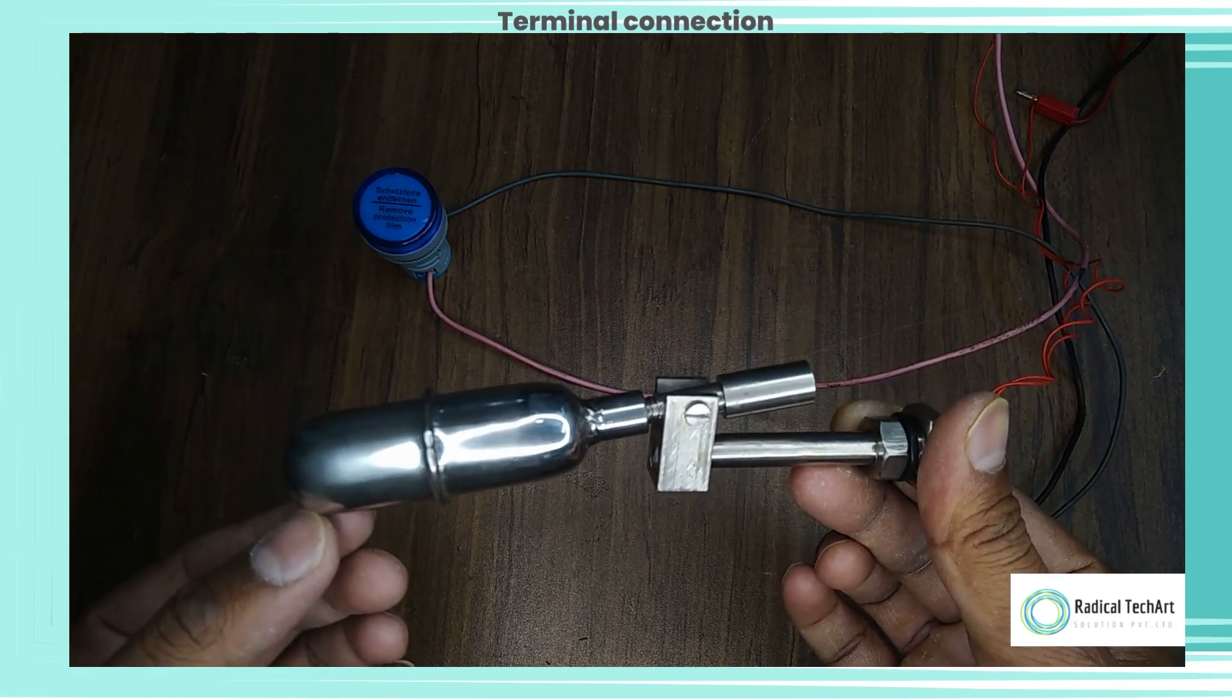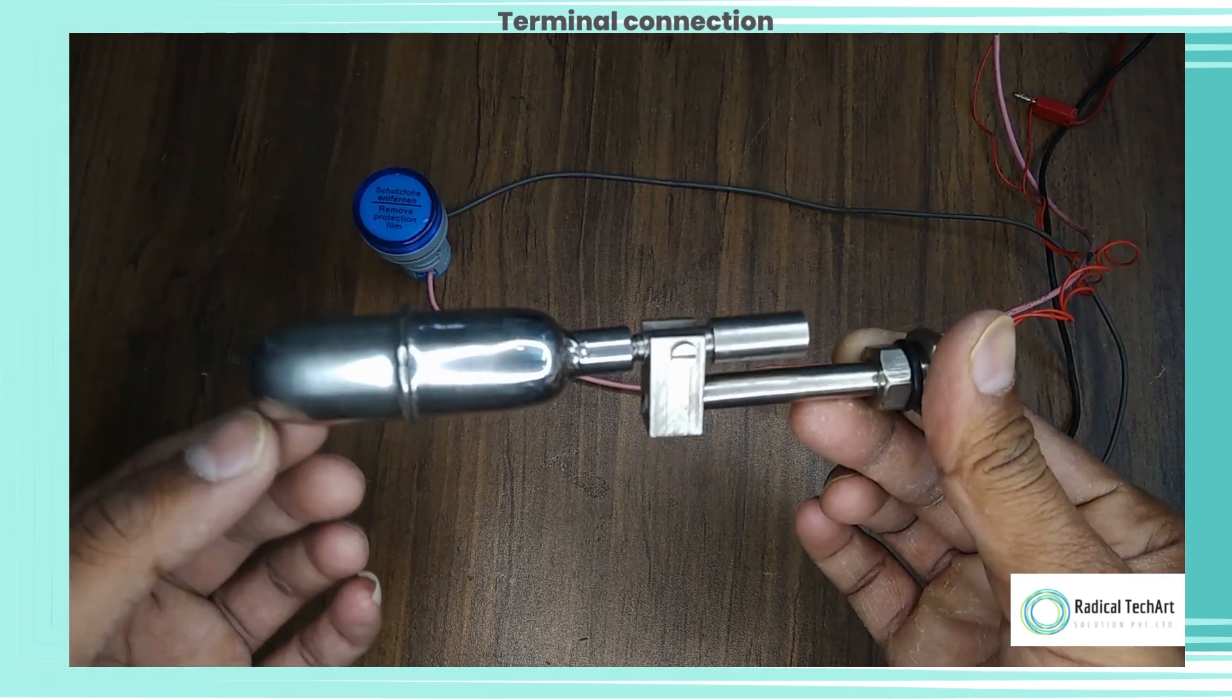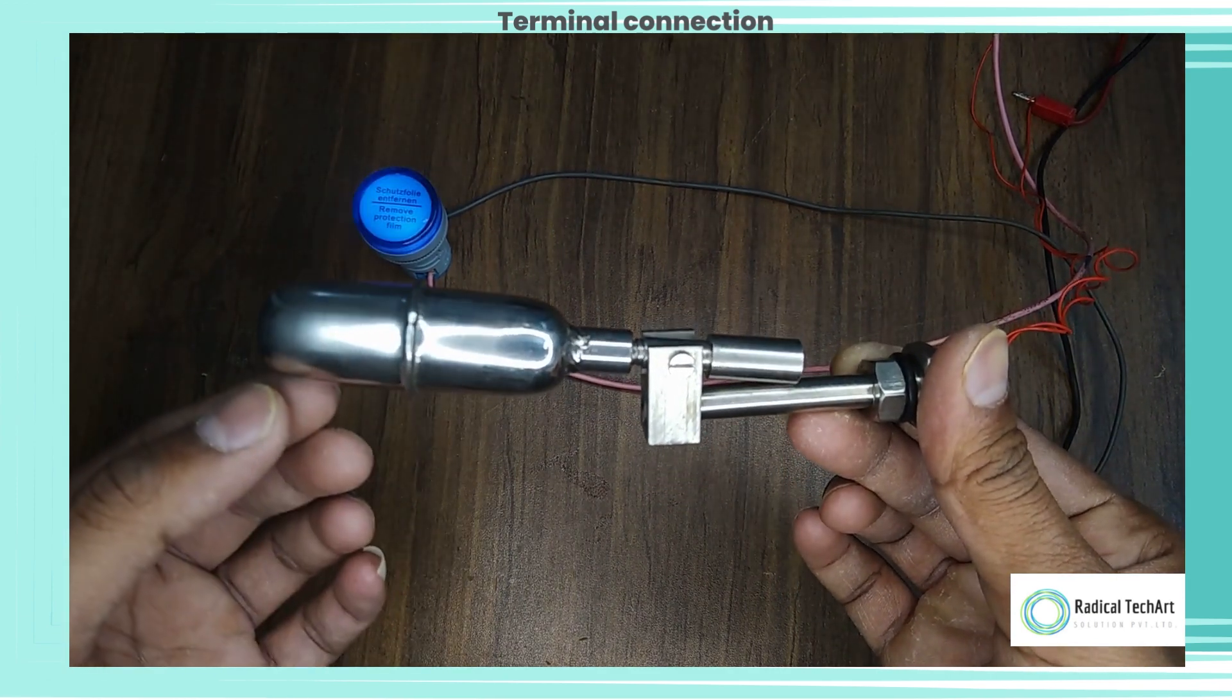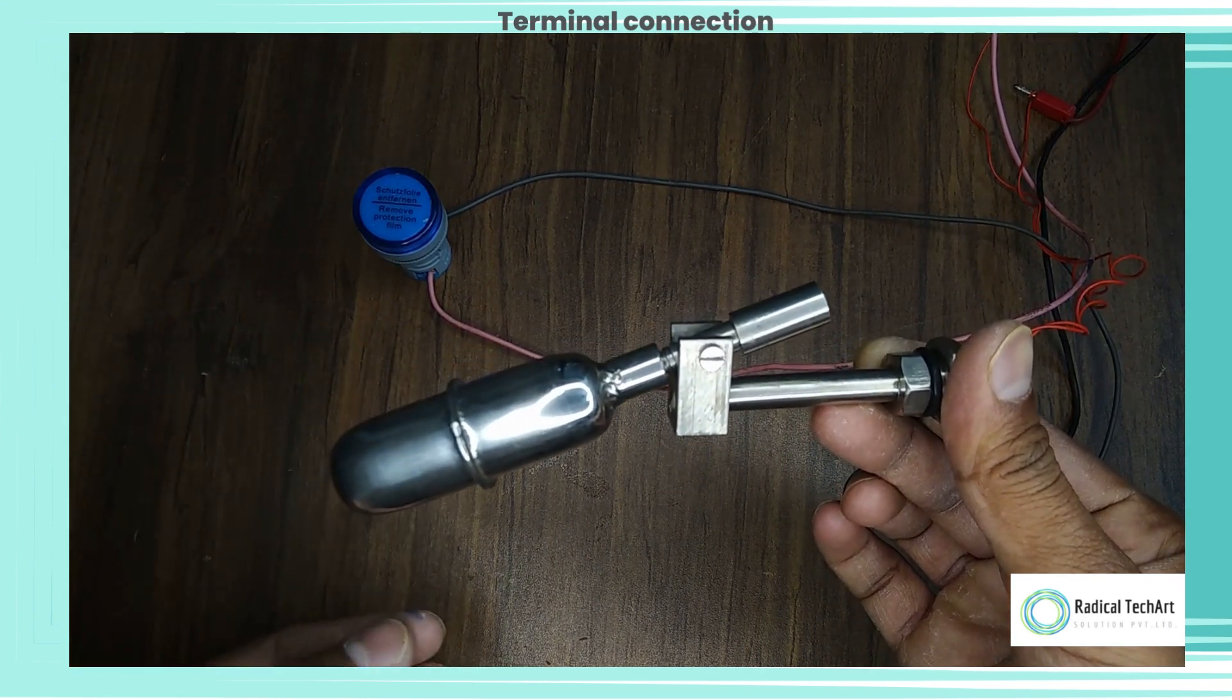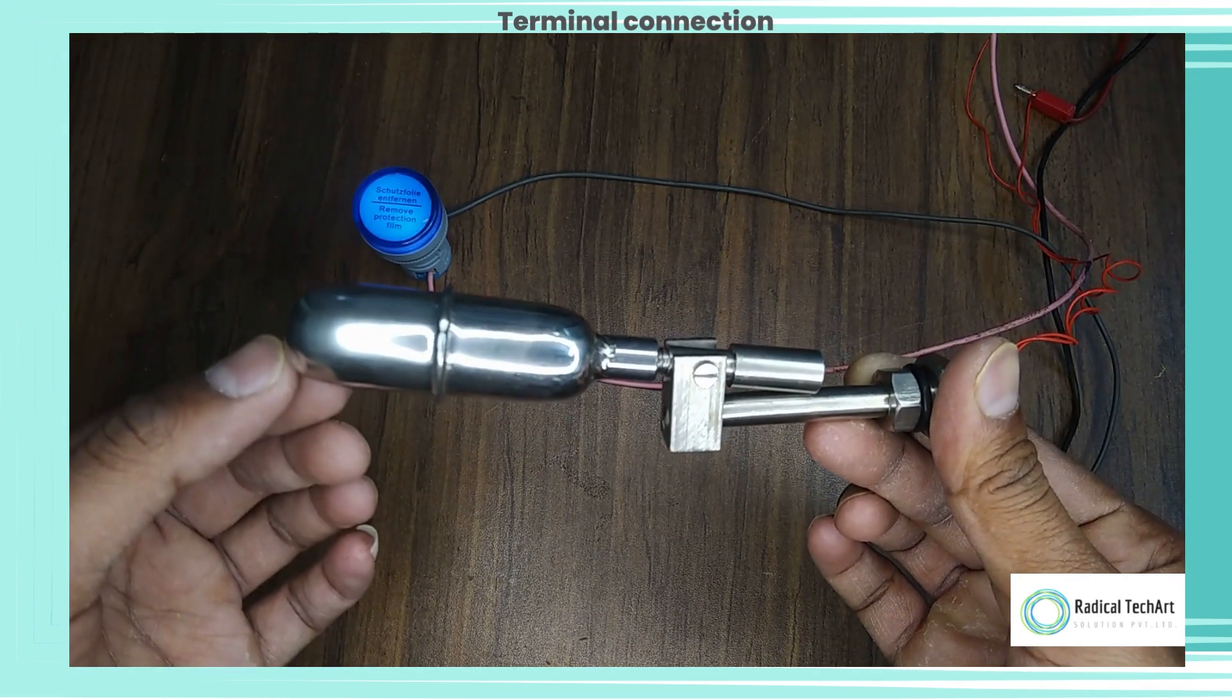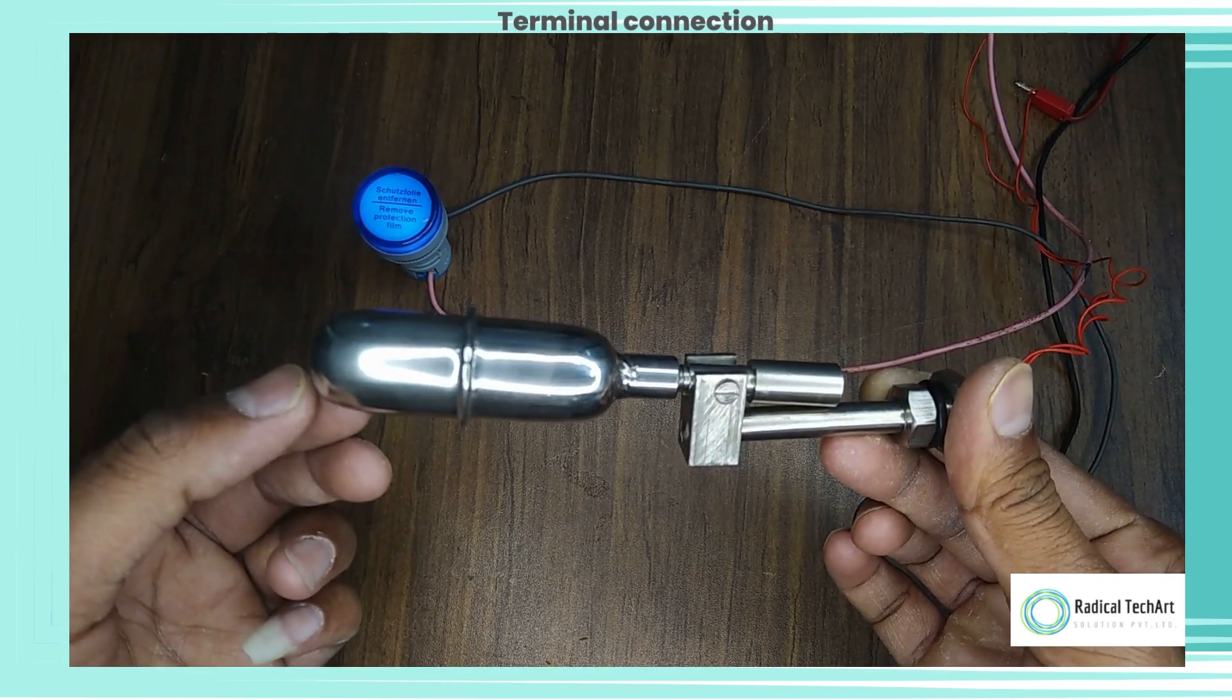Mount the side-mounted level switch on the tank or vessel at the desired level. Make sure that the switch is properly wired and connected to the power source and the relay. Install the relay that will operate the LED bulb. The relay should be connected to the power source and the LED bulb.